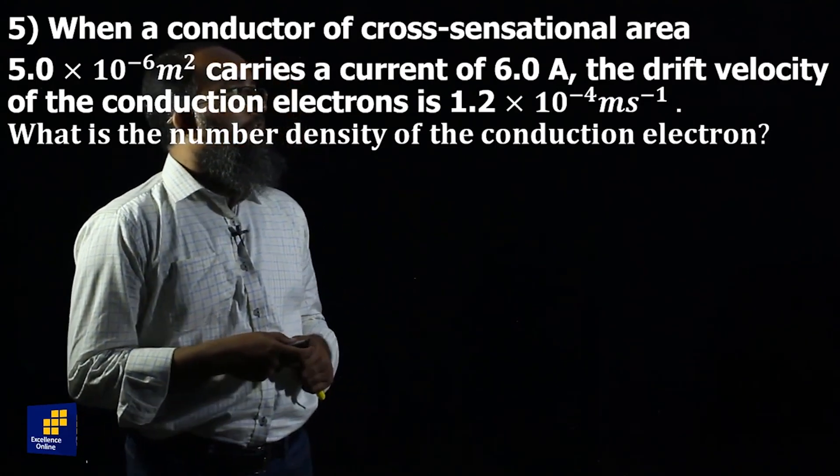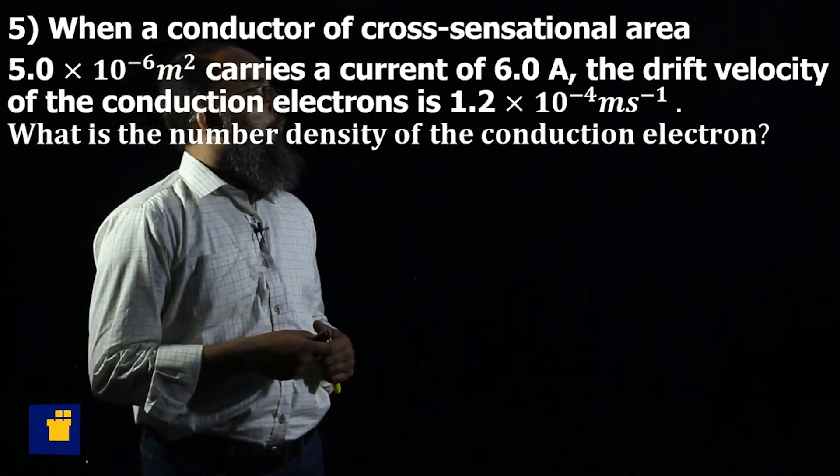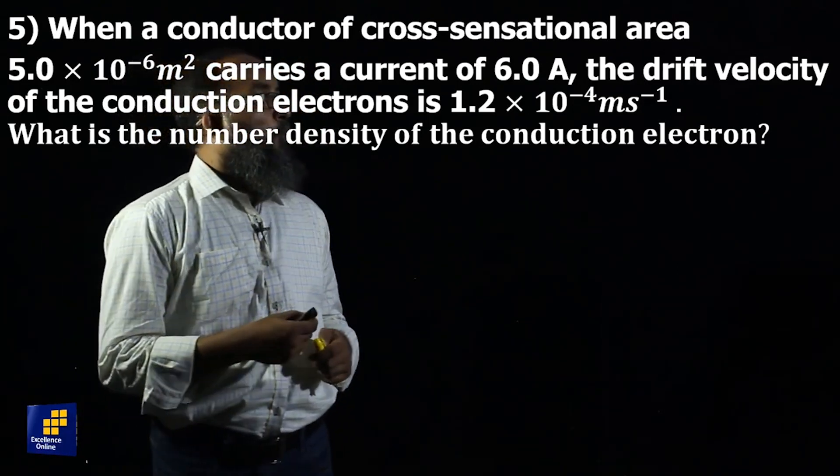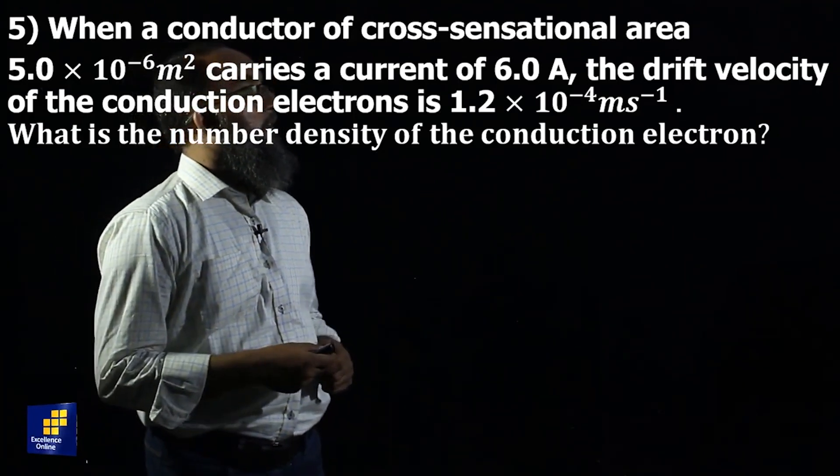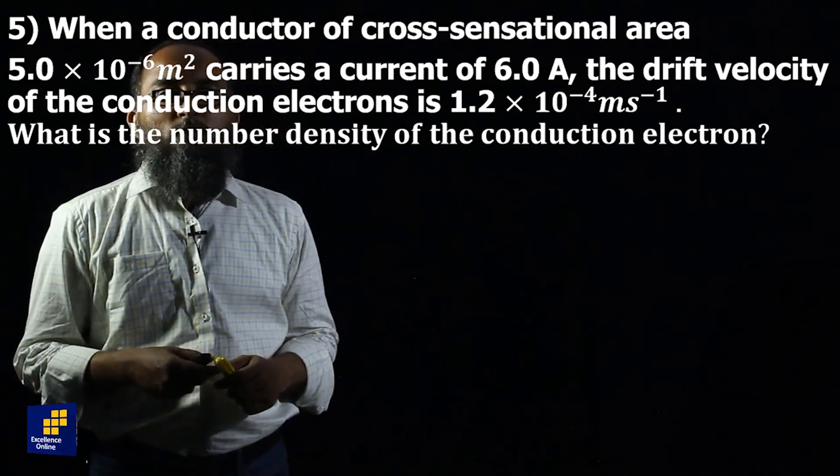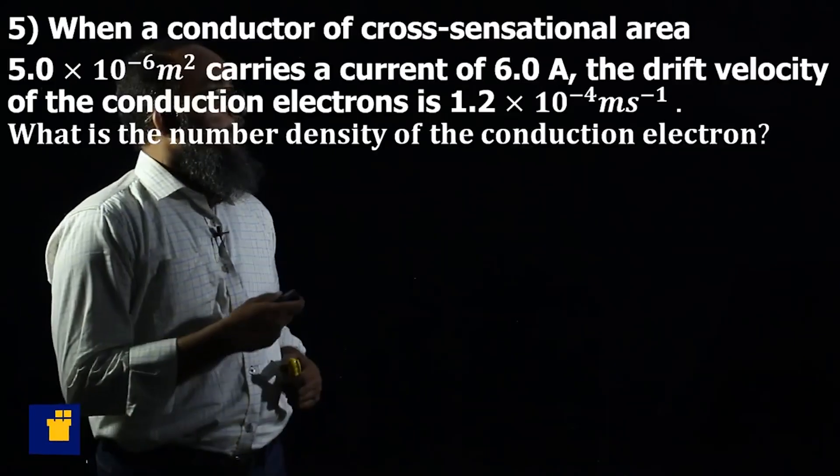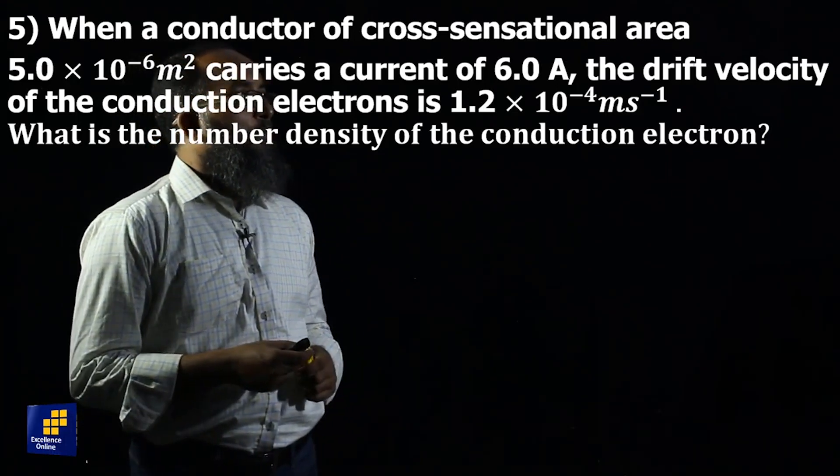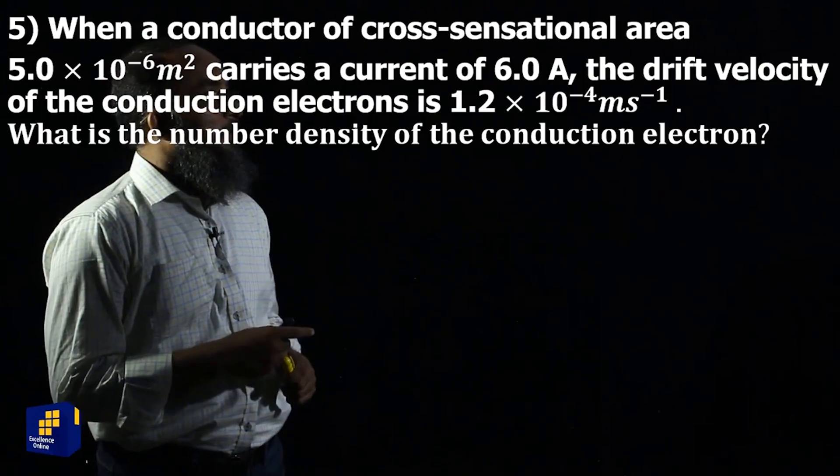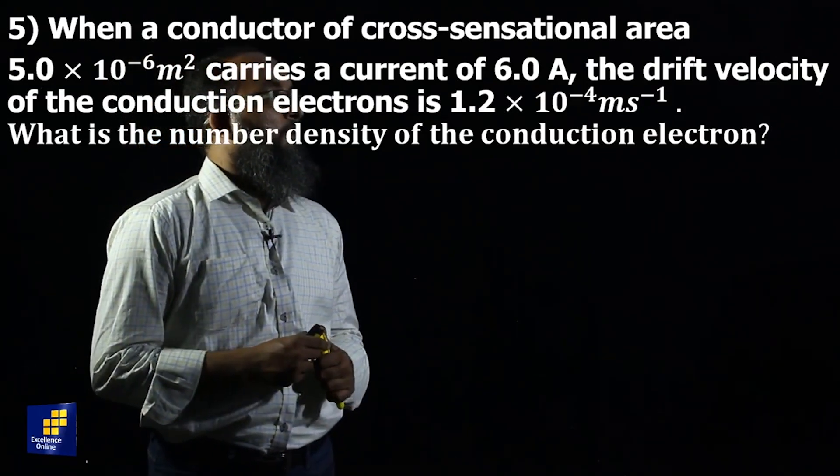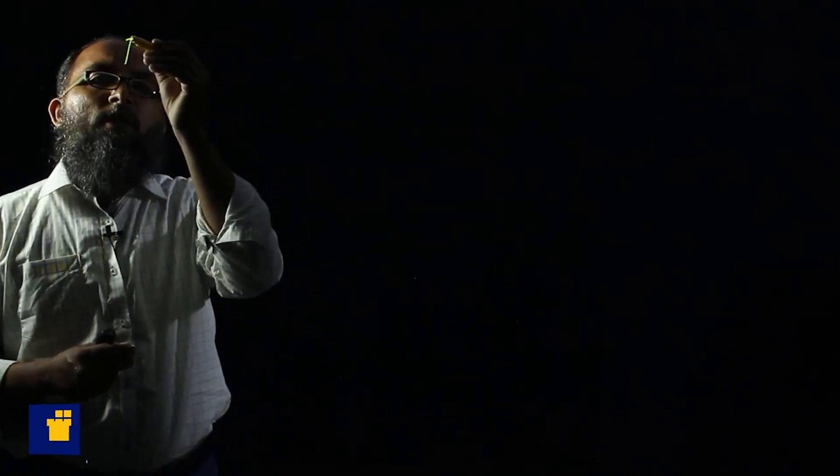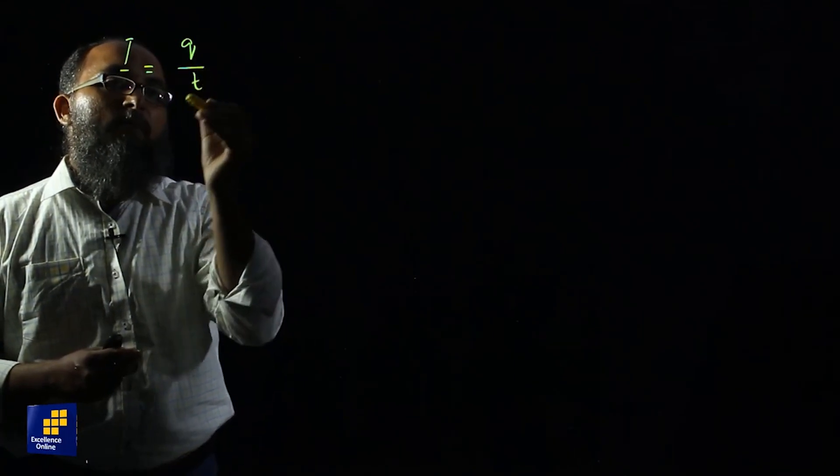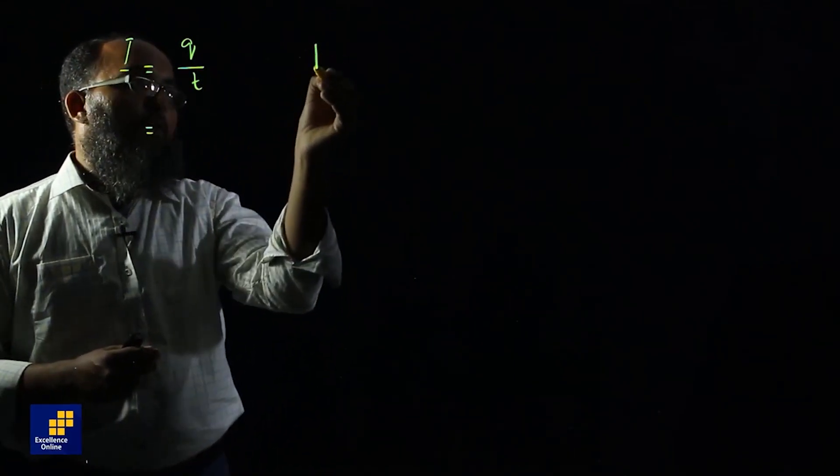The next question is here on the screen. When a conductor of cross sectional area 5.0 exponential minus 6 meter square carries a current of 6.0 ampere, the drift velocity of the conduction electrons is 1.2 exponential minus 4 meter per second. What is the number density of the conduction electrons? Number density means what is the number of electrons per unit volume in the conductor. As far as we know, current in a conductor is given by charge divided by time.